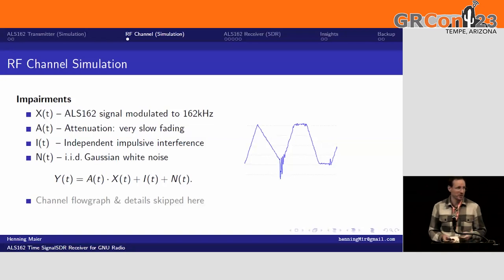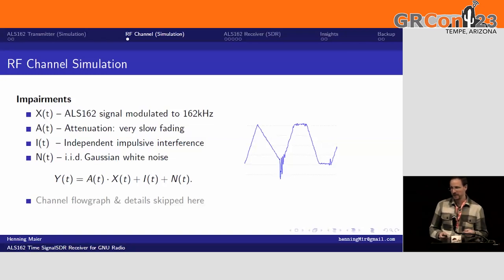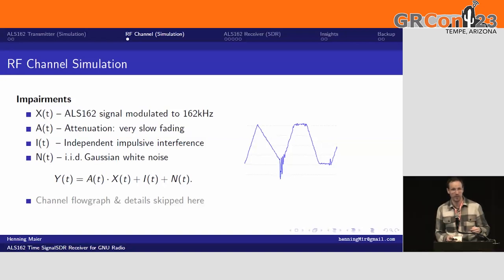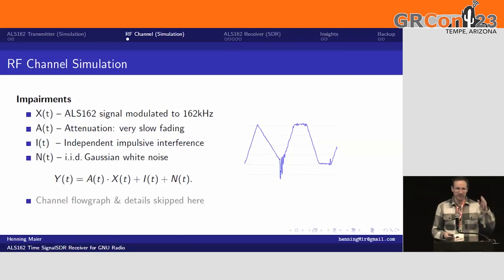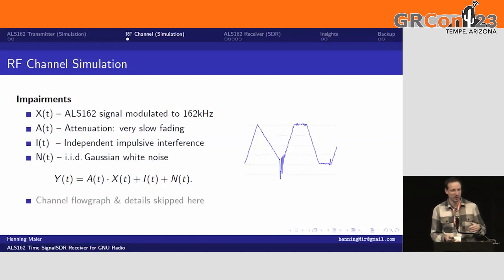Let's take it through the channel. It's a pretty basic channel and it actually resembles the actual channel — this is just a simulation, but the real signal looks pretty much the same. We have the signal submitted or modulated up to the frequency of 162 kilohertz. Then there will be a slight attenuation — it's pretty slow fading, you hardly see any difference over several minutes in the strength of the signal. Then we have, at least in my case, some independent impulsive interference — it looks like a heartbeat signal, some kind of spikes. Those interferences can be somewhat disruptive. And then of course we have noise. You can look into the repository and into the flow graph of the GNU Radio companion.